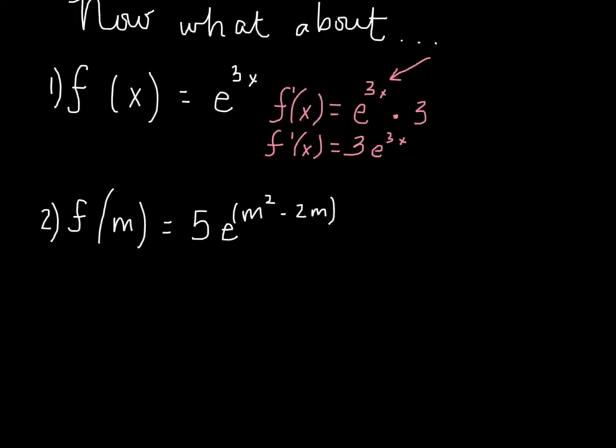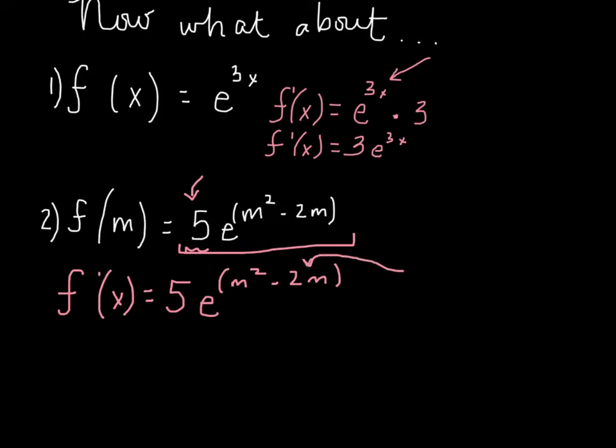In the second one, we have f(m) equals 5e to the m squared minus 2m power. The way that we will start our derivative is we always just rewrite exactly what we have. Think about chain rule. This just has to be a coefficient. We don't want to be talking about a product, and it is just the number 5. So the very first thing that we do is just rewrite it: 5e to the m squared minus 2m power. But now what we do is we go back into the power and we take the derivative of the power. So we're going to have all of that multiplied by 2m minus 2.